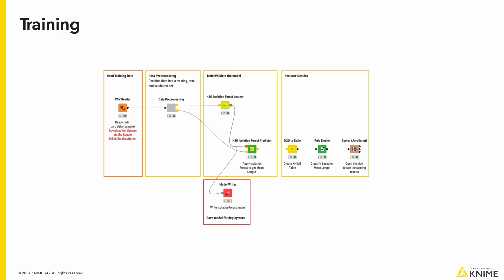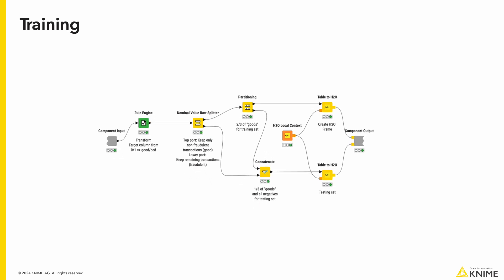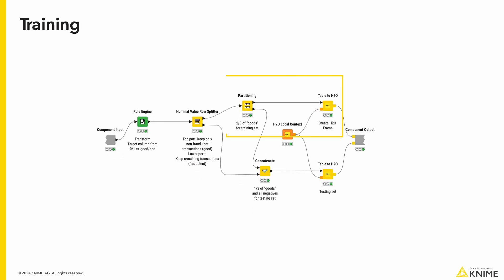For training, we first read in our dataset from our Kaggle dataset. Next, if we go inside the preprocessing component, we can see we split the sample data into two where the top port has the normal or good transactions and the bottom has the outliers or suspicious transactions.